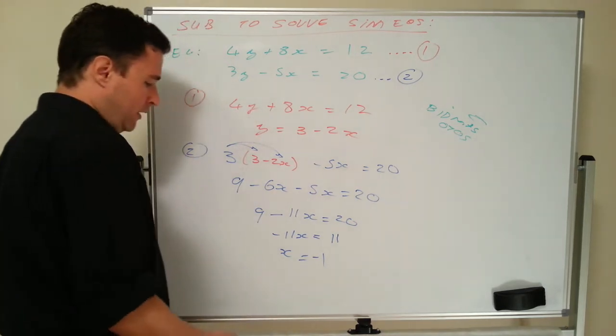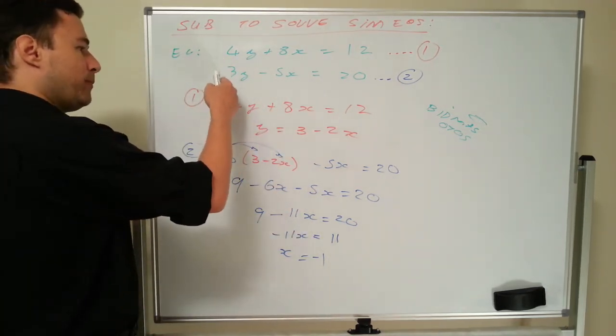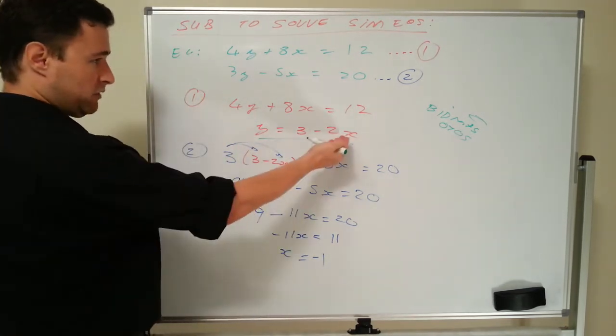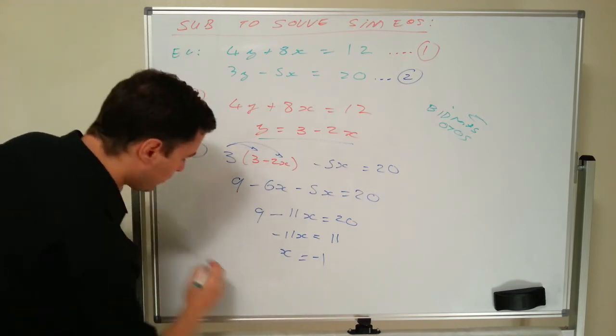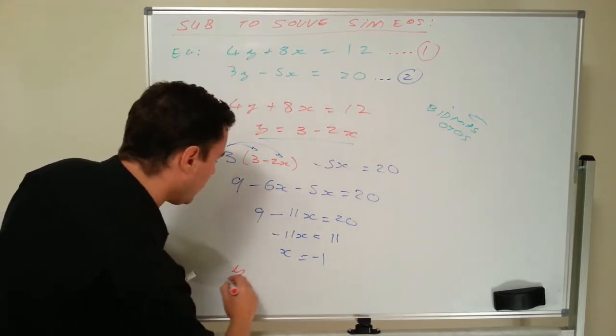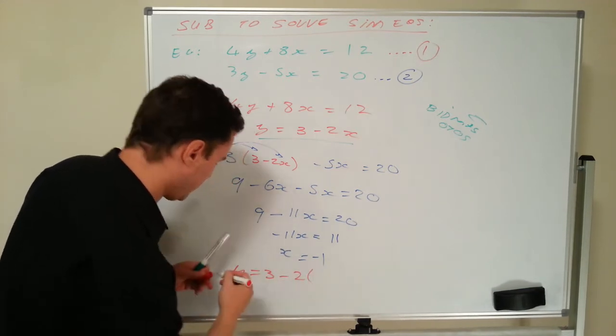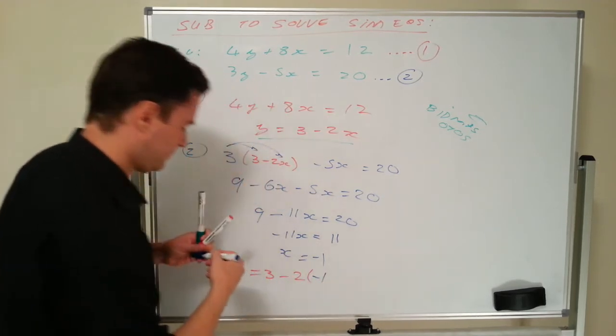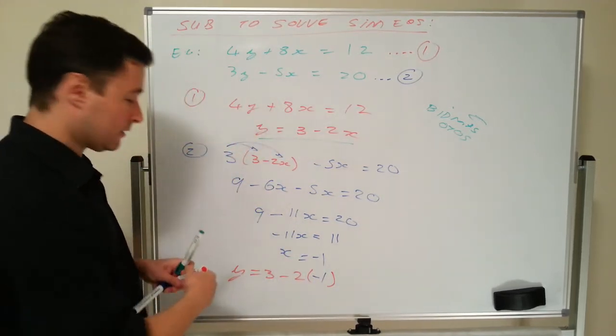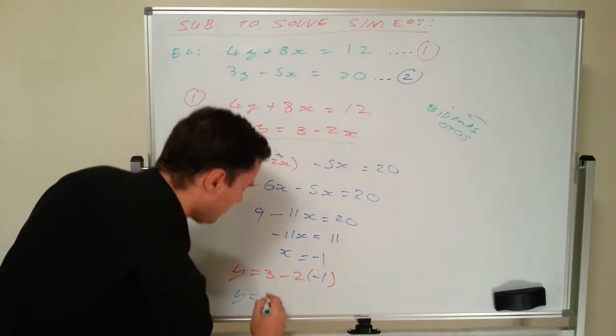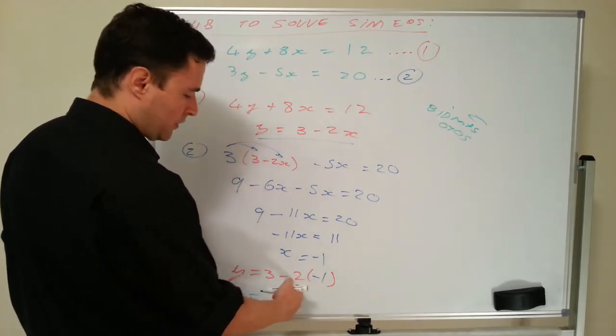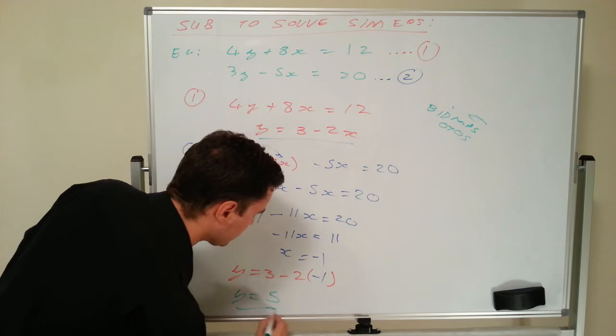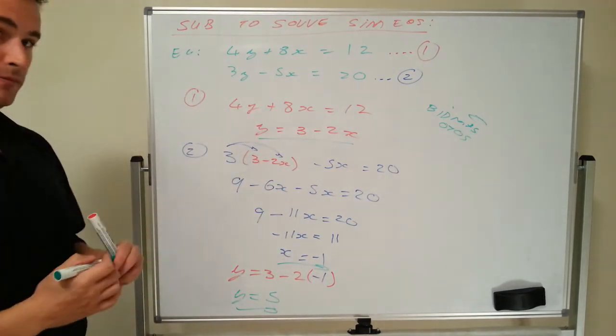Well, now I need to work out what y is. You could put it back into this one. You could put it back into this one. But to tell you the truth, the easiest one to put it back into is that one. Because I just have to substitute there and work it out and I have y. So I'm going to go into the red equation. Y equals 3 minus 2 times by minus 1. And that's it. And we just have to work it out. So y equals 2 times negative 1. Oh, sorry. Negative 2 times negative 1 is positive 2. 3 and positive 2 is 5. So y equals 5. X equals negative 1.